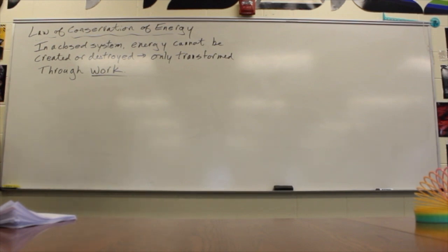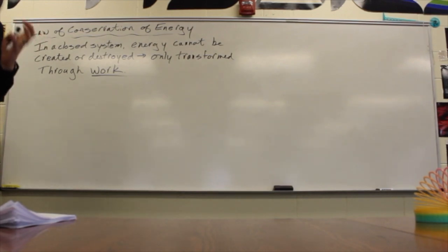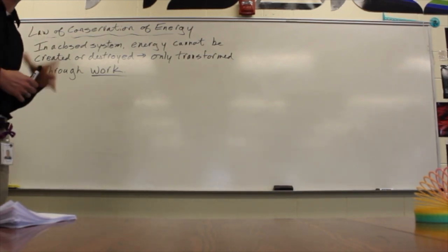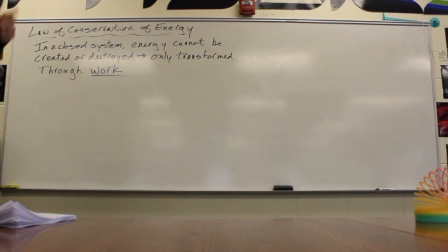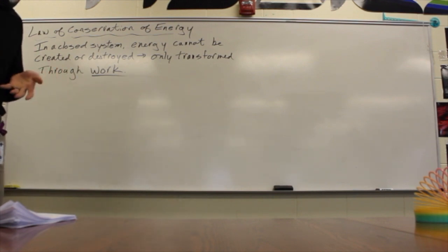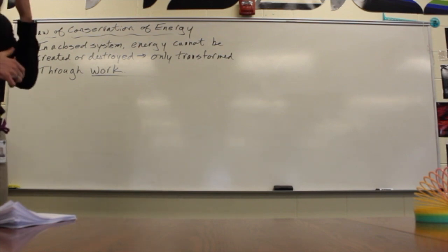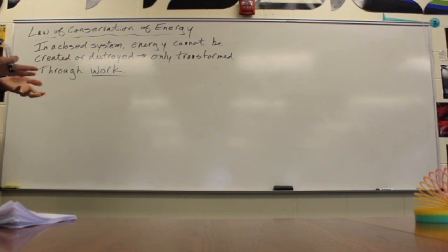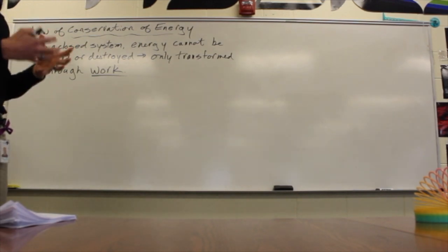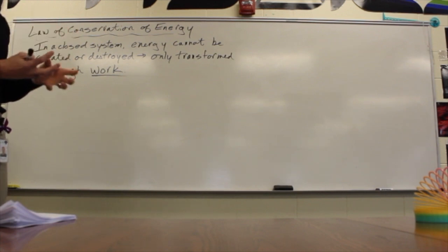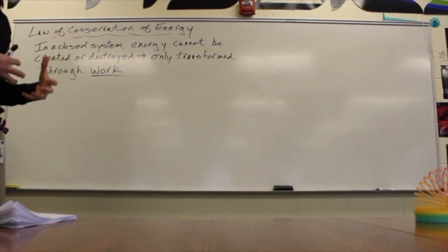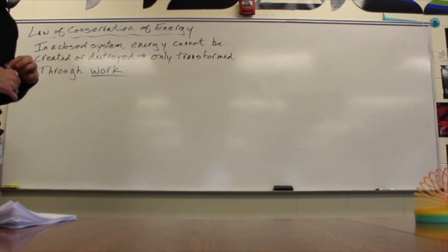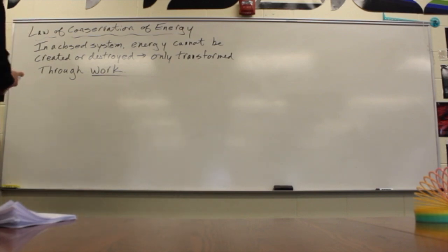So the idea is that in a closed system, energy cannot be created or destroyed. It can only be transformed through work, which means that when we define a system — things like a ball thrown in the air, a kid sliding down a slide, or a Mexican jumping bean jumping from your hand into the air — if we account for the total energy in that system as we have defined it, that value cannot change. And so the process is a conservative calculation.